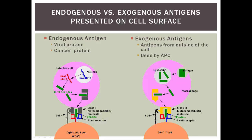A way to remember that CD8 goes with class 1 and CD4 goes with class 2 is to think of this formula: CD8 times MHC 1 — 8 times 1 equals 8. And CD4 with MHC 2 — 2 times 4 also equals 8. Both combinations equal 8. If you mixed them up, CD8 with MHC class 2 would be 8 times 2 equals 16, and 1 times 4 equals 4 — 16 doesn't equal 4. So keep them so they both equal 8: CD8 with class 1 and CD4 with class 2.